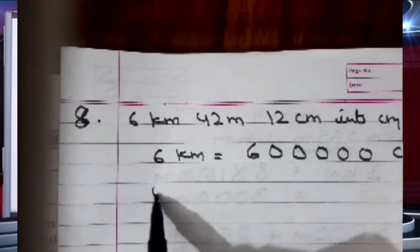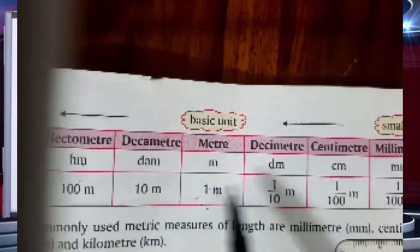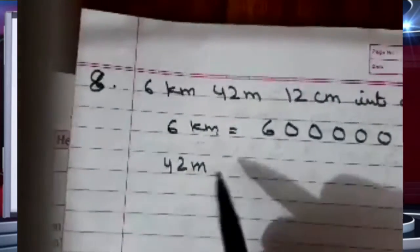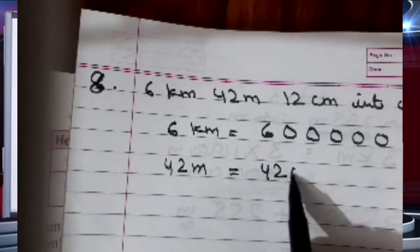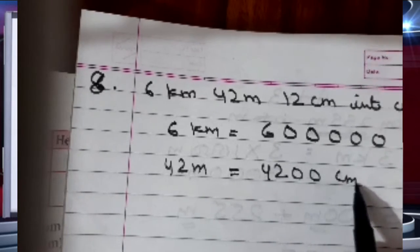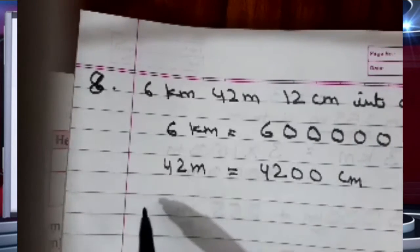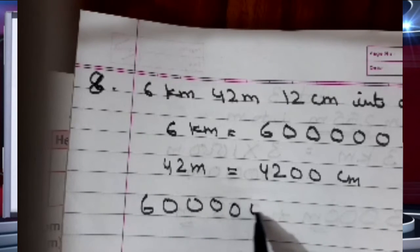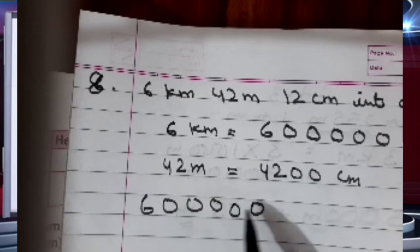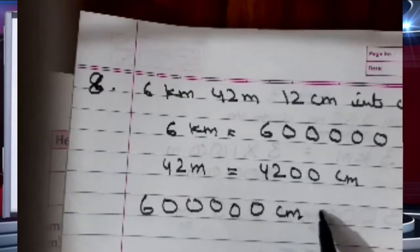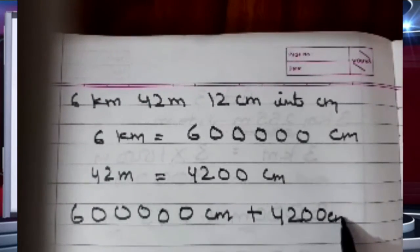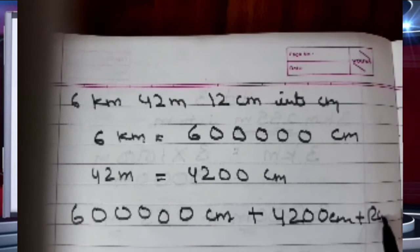Next is 42 meters. From meter to centimeter is only 2 jumps, so I multiply by 100 — that is 2 zeros. So 42 meter becomes 4200 centimeter. Next, 12 centimeter is already in centimeter only. So now I will add all of them: 600000 plus 4200 plus 12 centimeter.